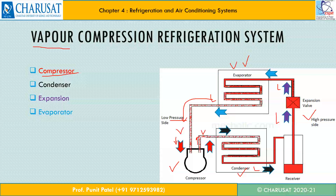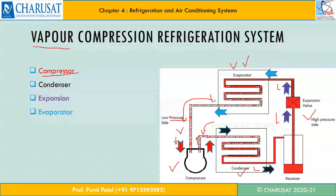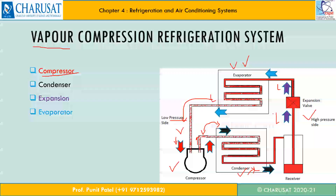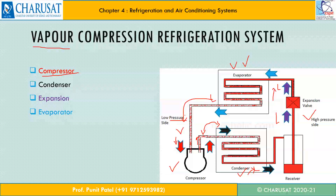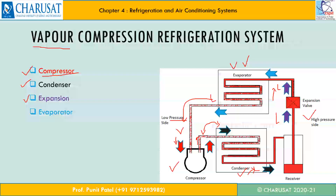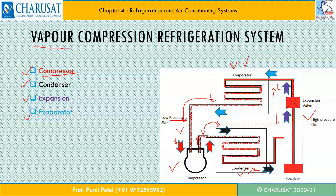That low temperature, low pressure vapor is then supplied back to the compressor, where it is converted into high pressure, high temperature vapor. Then the vapor is converted into saturated liquid in the condenser. Then the saturated liquid is converted into low pressure saturated liquid through the expansion device. And then it is converted back into low pressure, low temperature vapor in the evaporator. So it is just converting phases from liquid to vapor and vapor to liquid — the vapor enters into the compressor and the cycle is repeated. The function of the compressor is to compress the refrigerant and convert it into high pressure vapor.